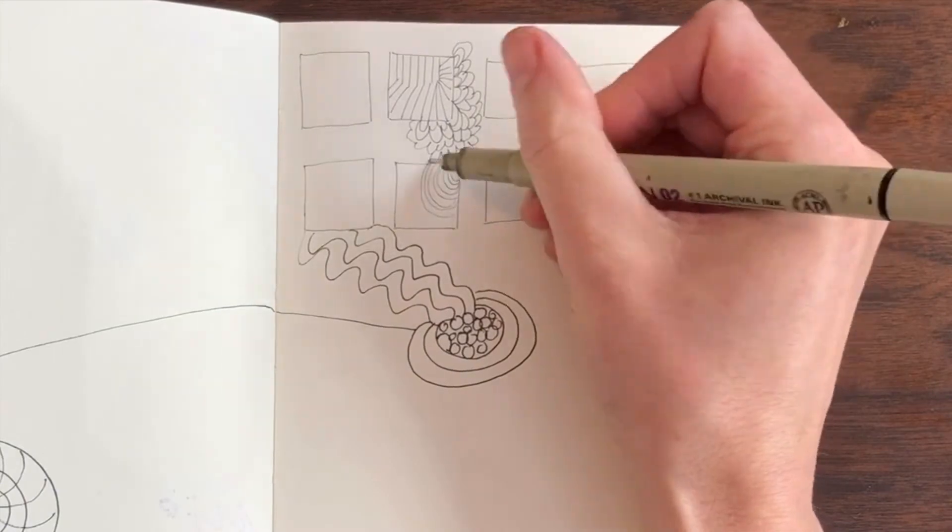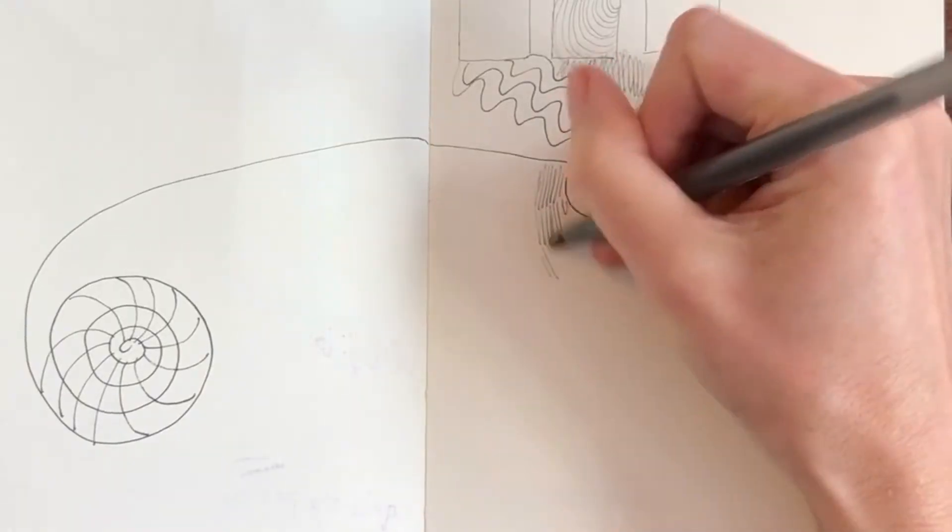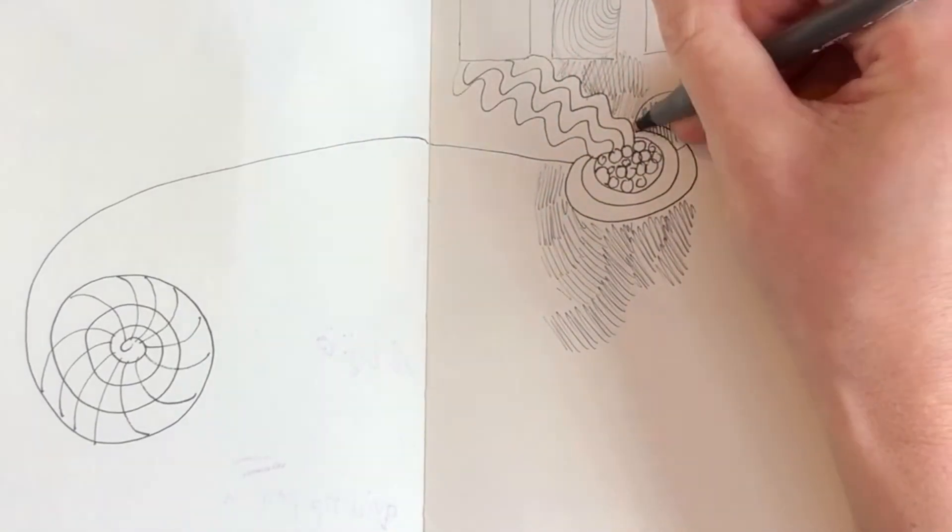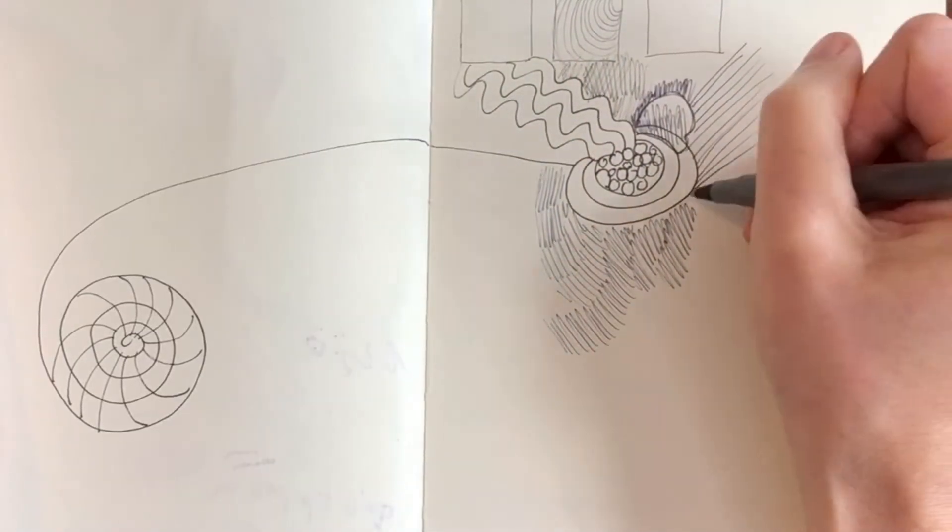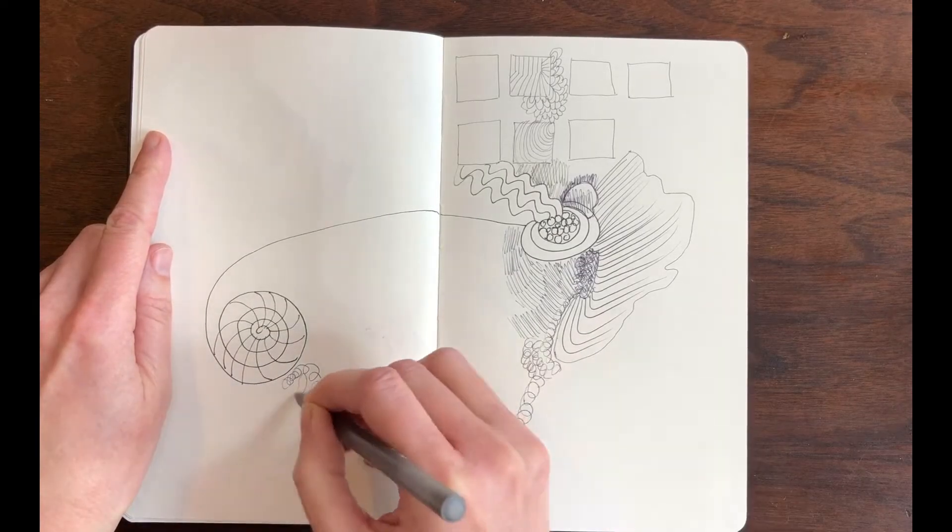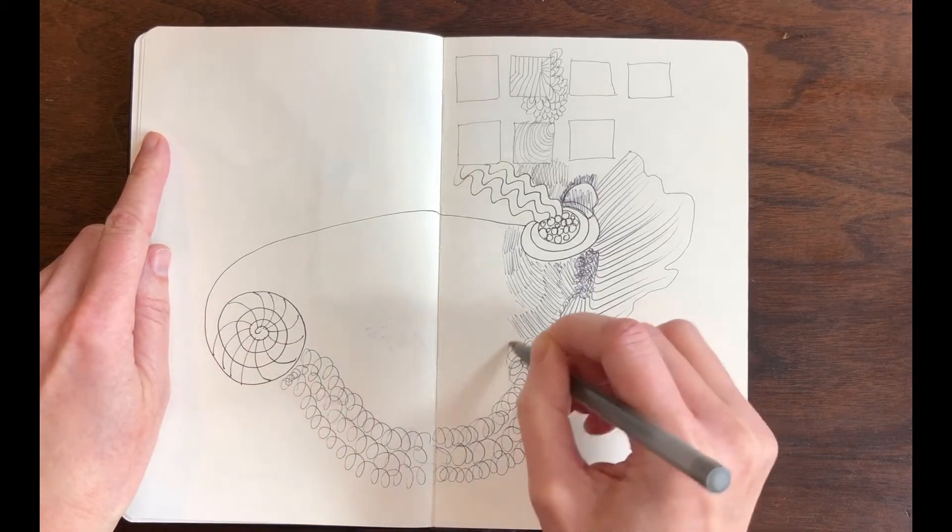In my doodles I like to do lots of different types of mark making because it makes it more fun for me. Some people might only want to doodle with one type of mark and that's okay too. I like to make a lot of hatching marks when I draw or doodle. Here I'm using some loopy lines to connect the two sides of my sketchbook and the two parts of my drawing.